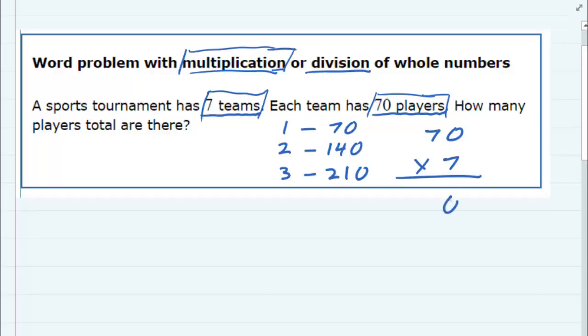And when we multiply, we could bring down the zero. Seven times seven is 49. So there are a total of 490 players between the seven teams.